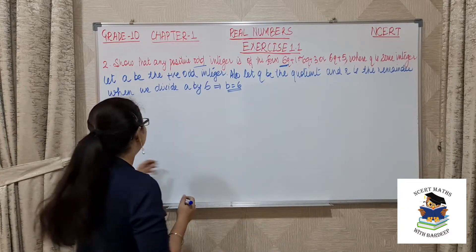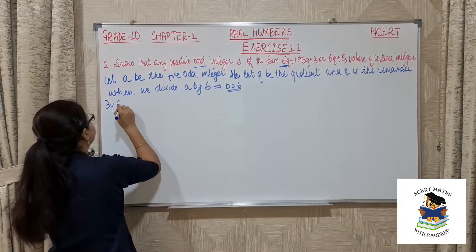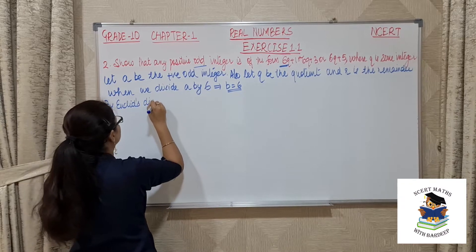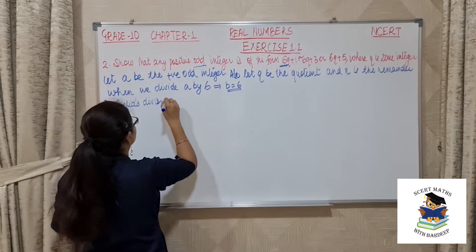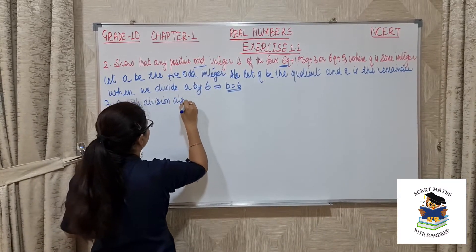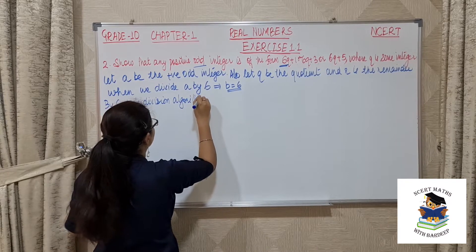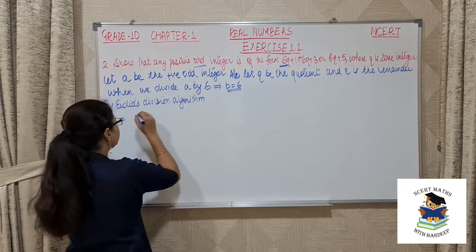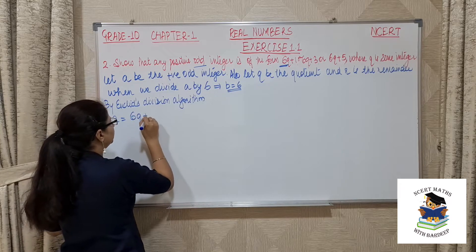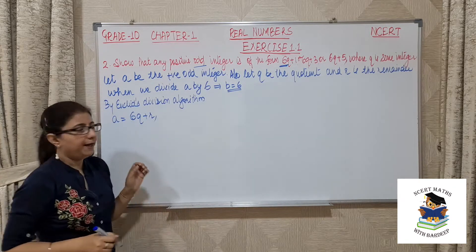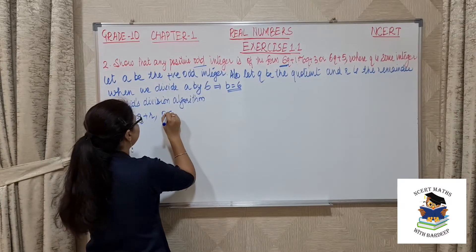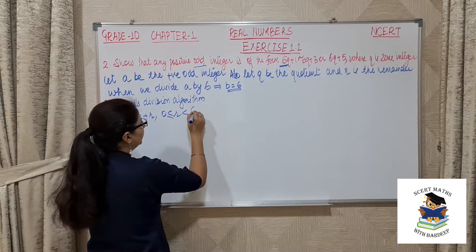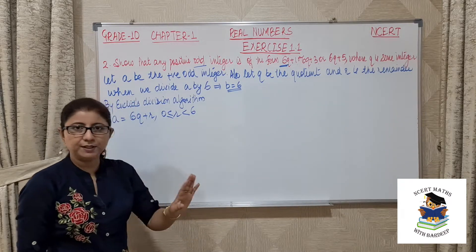By Euclid's division algorithm, A equals BQ plus R, where B is 6. So A equals 6Q plus R, with the condition that 0 is less than or equal to R, which is less than B, and B is 6.